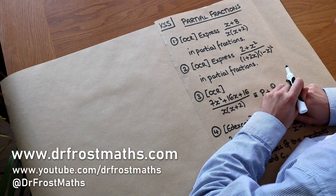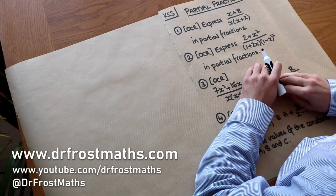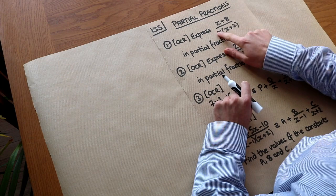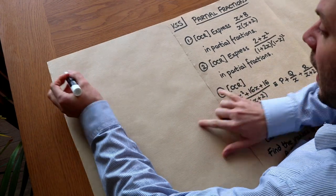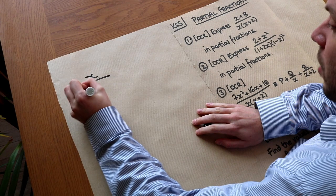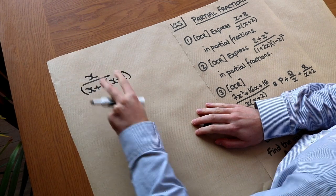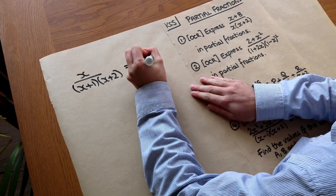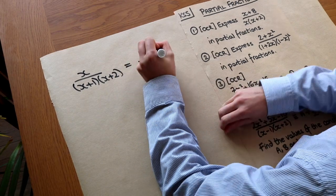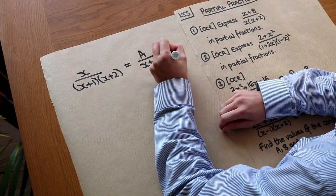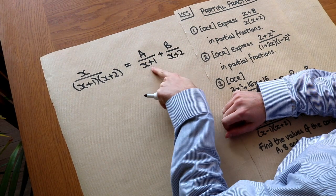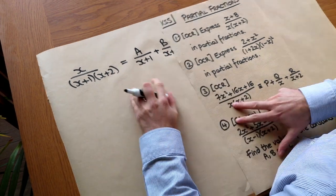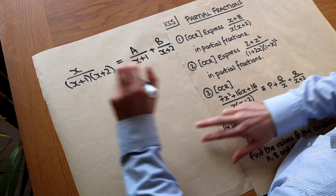Hello and welcome to this Dr. Frost Maths video on Key Stage 5 Partial Fractions. What it means to express a fraction as partial fractions is that we no longer have a product at the bottom. So for example, if I had x over (x+1)(x+2), we've got this product of terms at the bottom, so we might want to write it as two separate fractions: something over x+1 plus something over x+2. We can see that we've got separate fractions with the denominator of each thing in this product. So let's use that to express this in partial fractions.